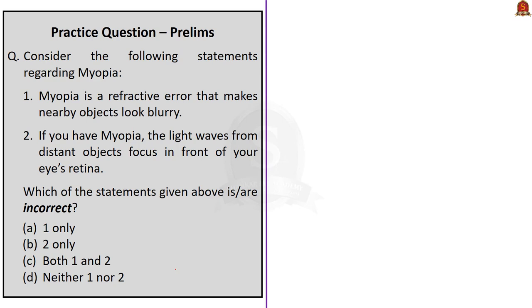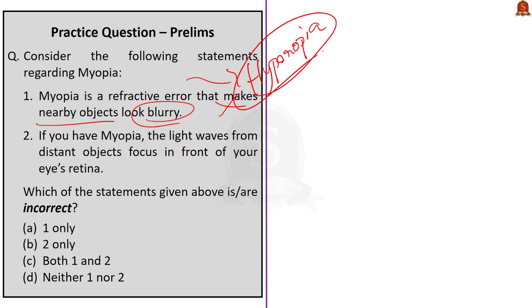Second question: Consider the following statements regarding myopia. Statement 1: Myopia is a refractive error that makes nearby objects look blurry. Statement 2: If you have myopia, the light waves from distant objects focus in front of your eye's retina. Which of the statements given above are incorrect? Option A: 1 only. Option B: 2 only. Option C: Both 1 and 2. Option D: Neither 1 nor 2. Statement 1 is incorrect — myopia does not make nearby objects look blurry; it is hyperopia (farsightedness) that does so. Myopia makes distant objects look blurry. Statement 2 is correct — in myopia, the light from distant objects focuses in front of the retina. The question asks for incorrect statements, and only statement 1 is incorrect. So the answer is option A, 1 only.